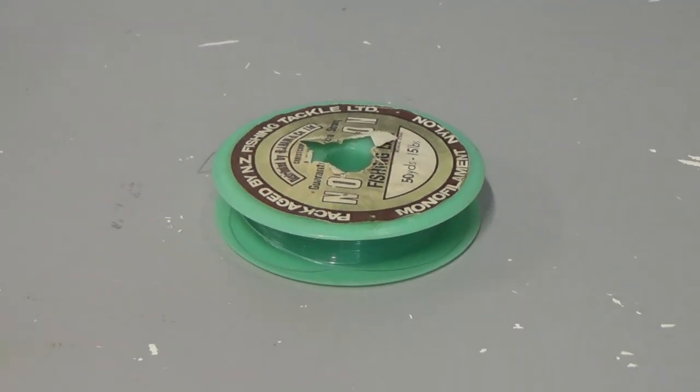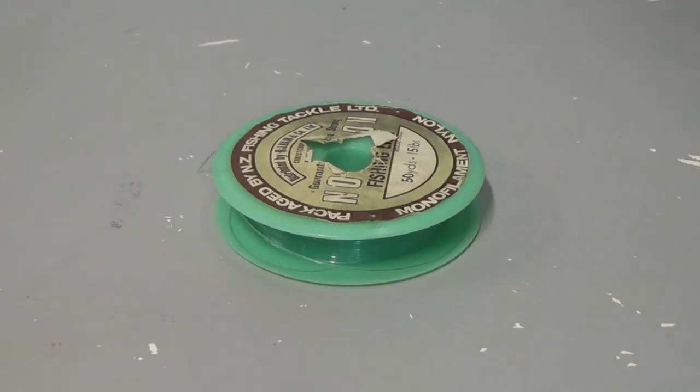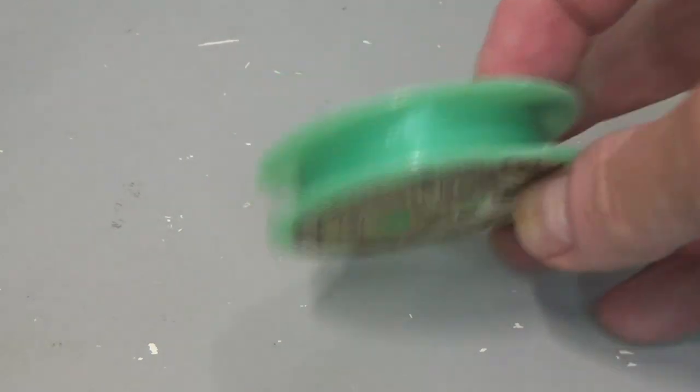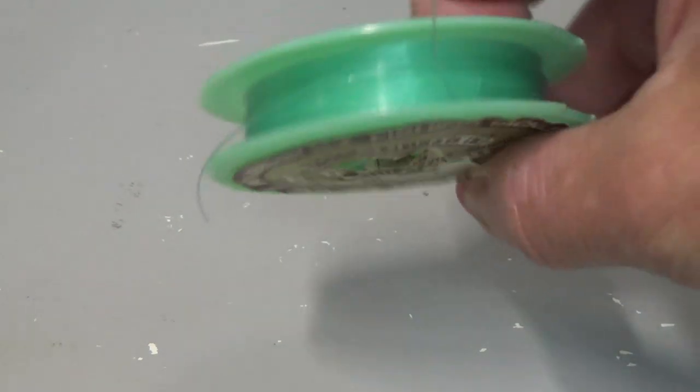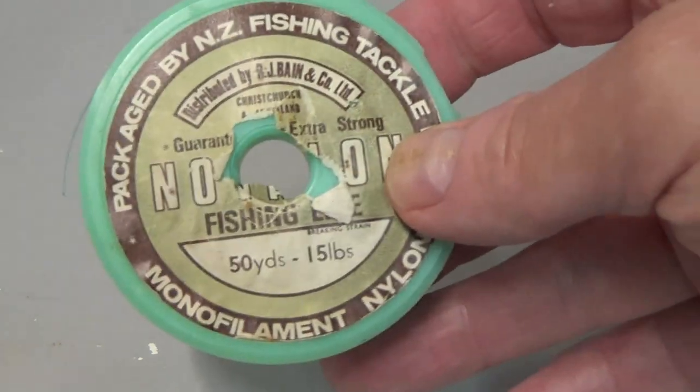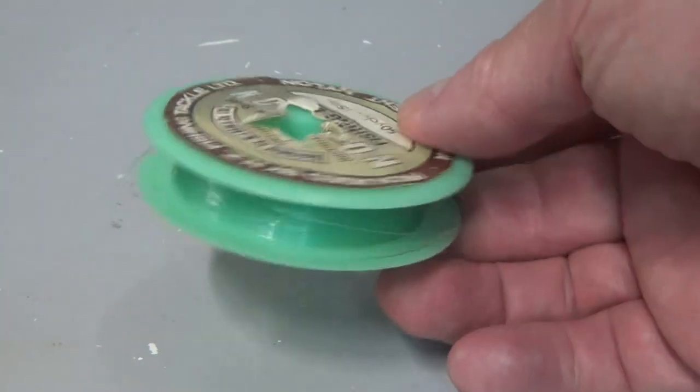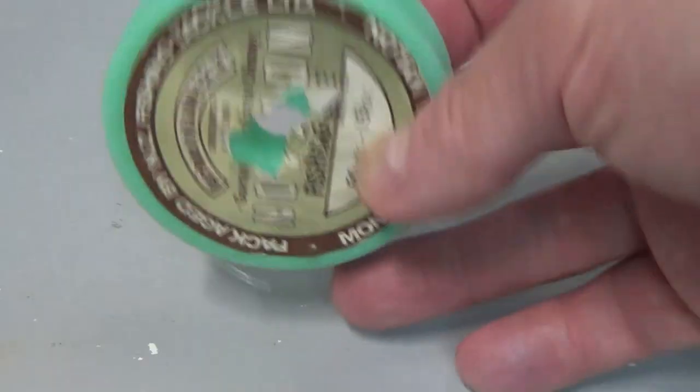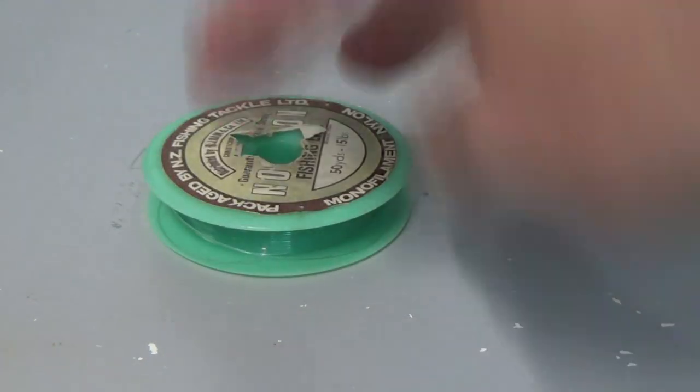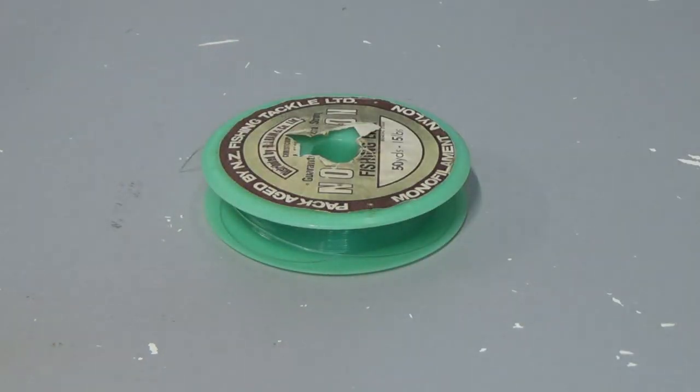So there you go, this is it, this is the secret. This is what I use - this is fishing wire, and you can see there on the front that it says 50 yards, 15 pounds. I have absolutely no idea how old this reel of fishing line is. My dad gave it to me a long time ago, probably nearly 30 years ago, and it's still the same lot that I've been using all this time to hang up all of my ships.